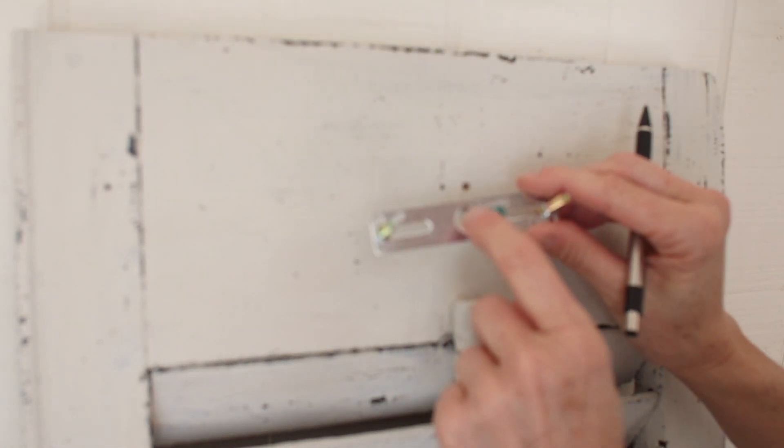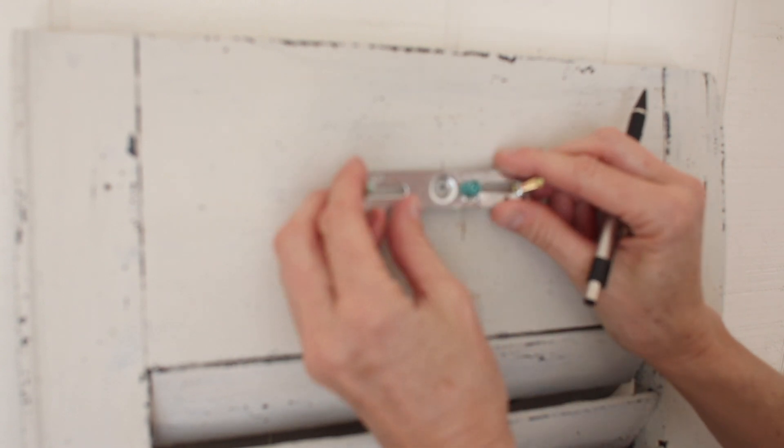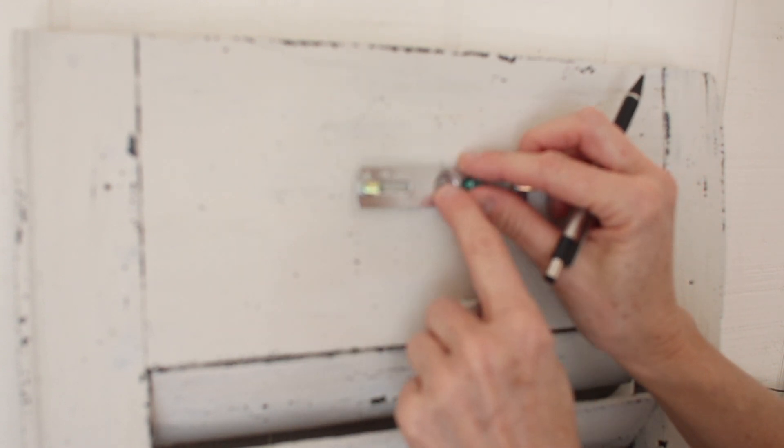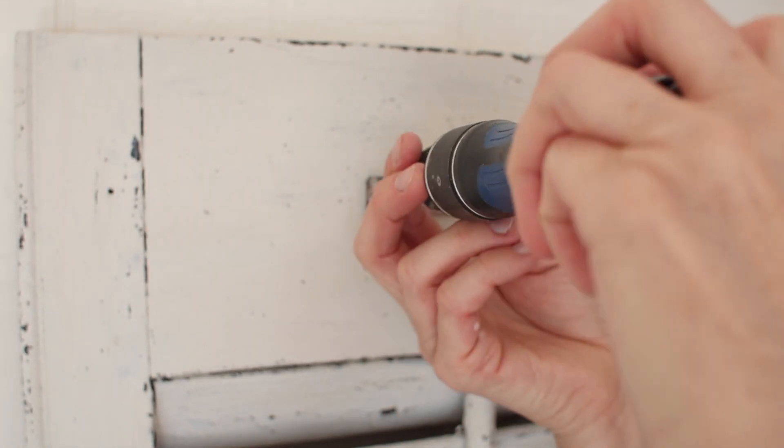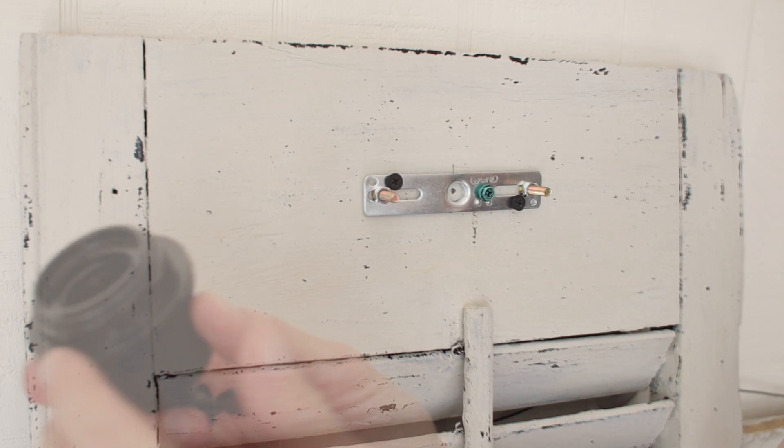I've matched up the center hole with the center of the bracket, and then I attached it. I pre-drilled holes and then I used my screwdriver and one-inch screws to attach the bracket to the shutter.